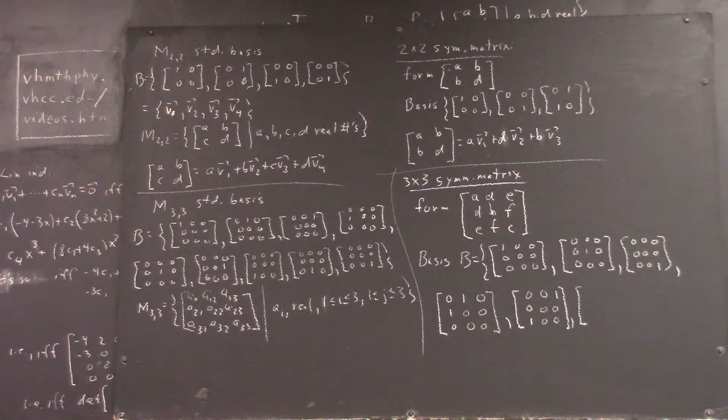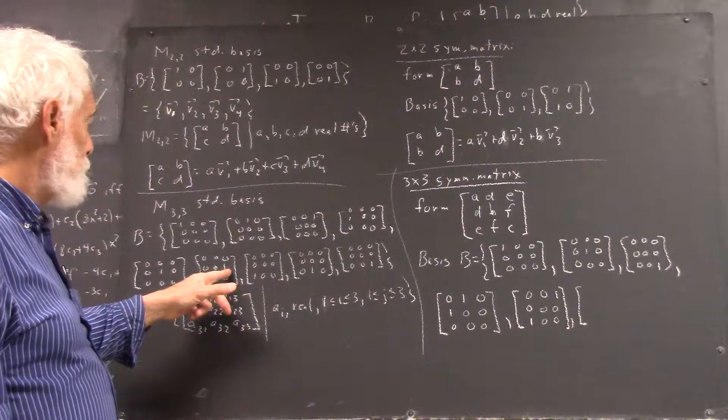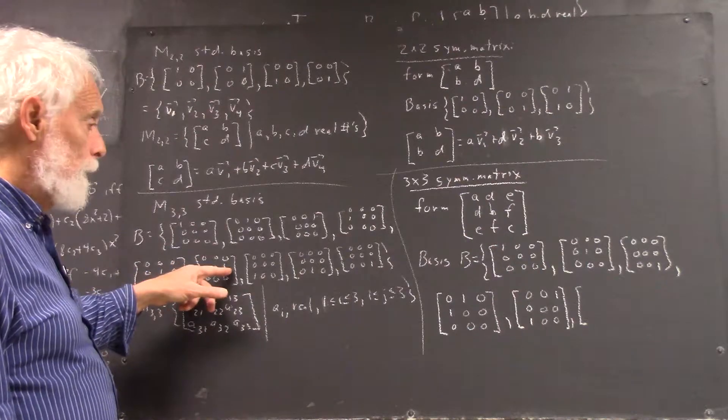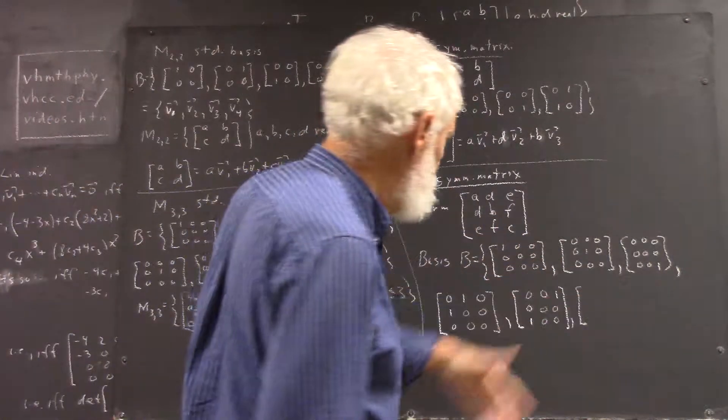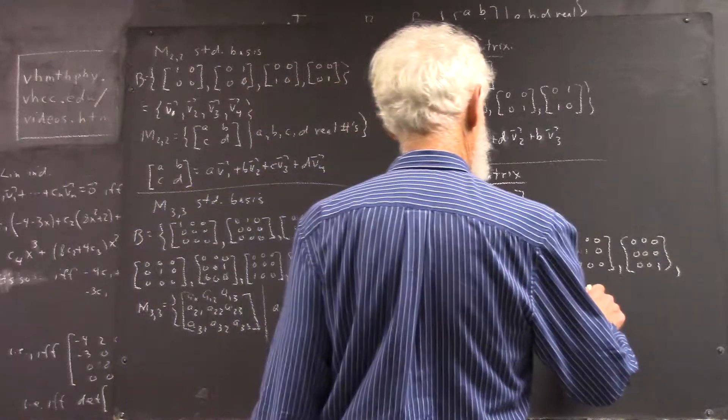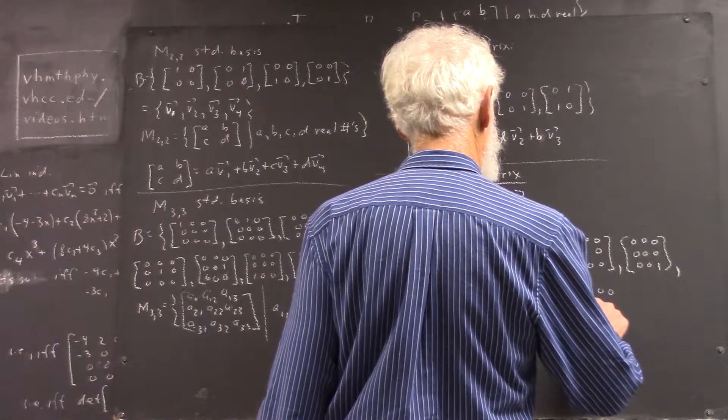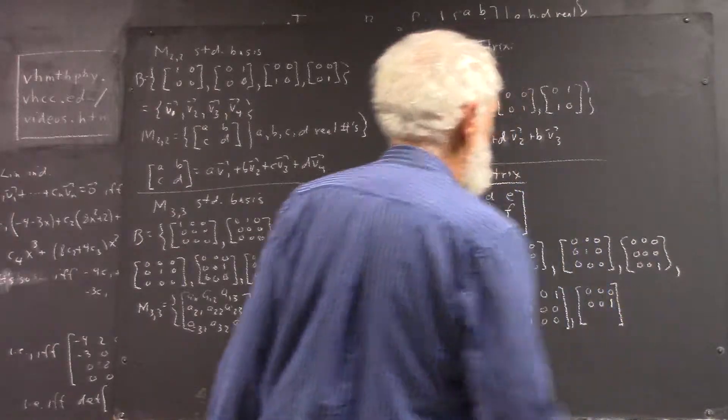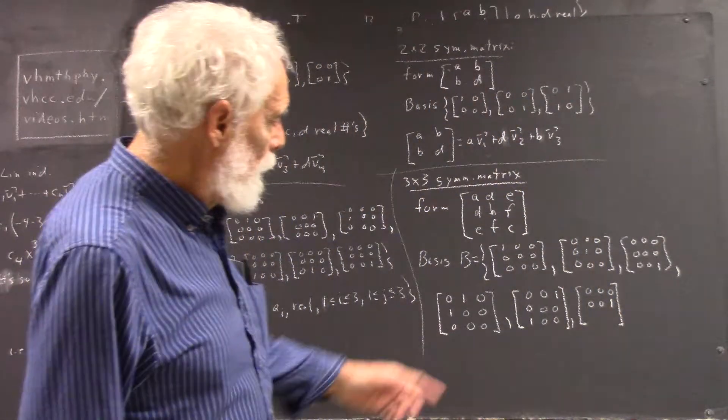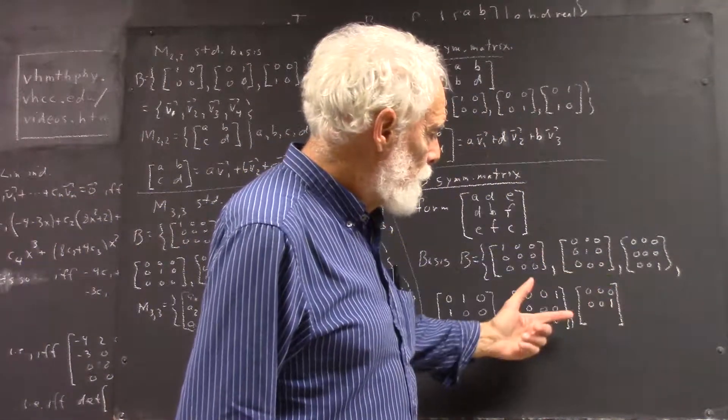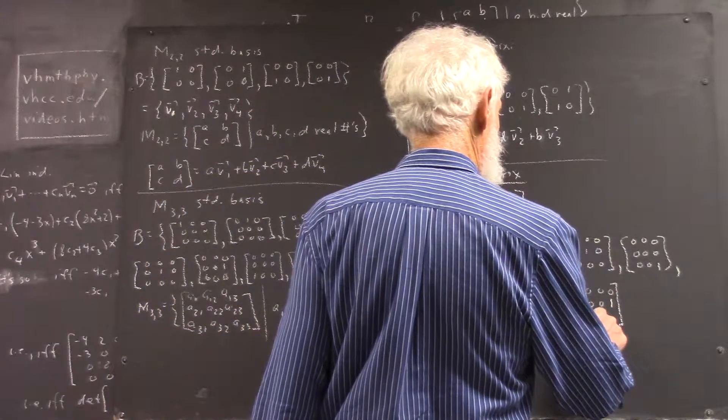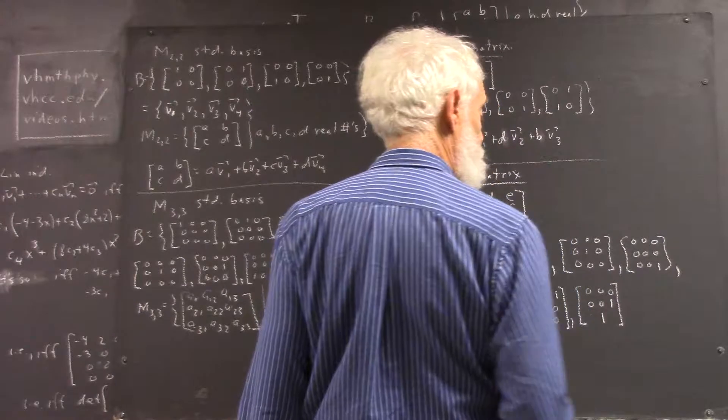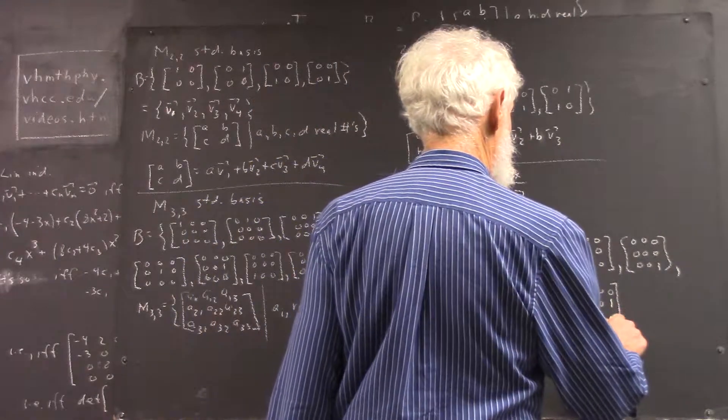Then what? Well, let's see. I could use this one, couldn't I? I've got zero, zero, one here, and I don't have a matrix with a zero, zero, one in it. So, let me do that. Zero, zero, zero, zero, zero, zero, one. Now, what do I need to make this symmetric? Well, I have to have a second column that's equal to the second row. So, that means I'm going to have zero, zero, one for my second column, and now I complete my second row.